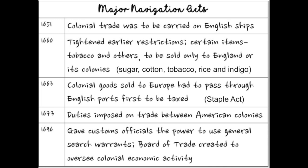In 1673, a Navigation Act is passed which imposes duties — taxes — on trade between American colonies. Previously, if Georgia sold something to Virginia, colonists didn't pay taxes on that. But now, if something goes between Georgia and Virginia, or New York and South Carolina, there is a tax paid to the English. In 1696, another law gives customs officials the power to use search warrants — to board ships and come onto people's property — to make sure colonists are abiding by the Navigation Acts.